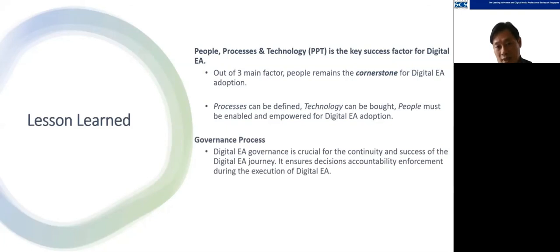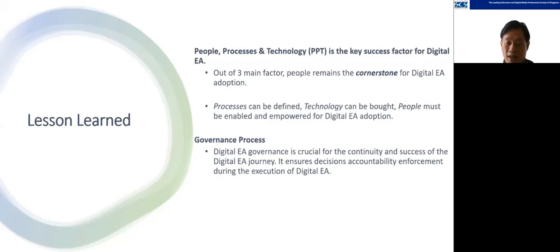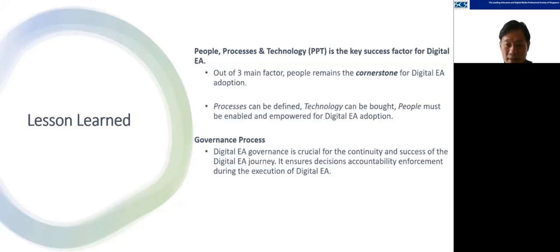Governance process: we learned a hard lesson here. Previously we documented our EA artifacts, but after all the hard work was done, there was no formal process for information to flow back to the EA team to ensure the digital enterprise map was updated over time. Trust in the digital enterprise map eroded and people gradually stopped using it, so all that effort was lost. The lesson we learned: before embarking on any architectural effort, always ask yourself what the governance process is — can you ensure that changes are propagated back to the team, the map is kept updated, and information flows back to management for informed decision-making?